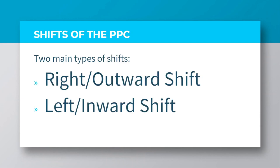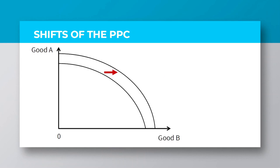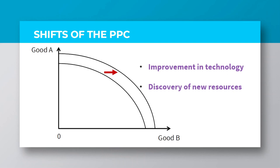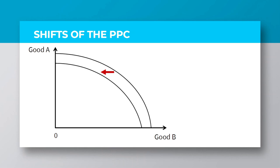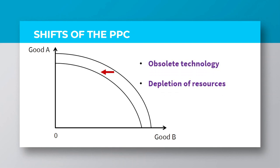Now, the production possibilities curve can shift to the right or left. There are basically two main types of shifts: an outward shift and an inward shift. An outward shift shows that the economy is growing or expanding because in such a situation, more of goods A and B can be produced, and this could come about through the improvement in technology or the discovery of new resources. An inward shift represents that the country is contracting or showing decline in growth, since less of both goods A and B are produced, and it could come as a result of obsolete or old-fashioned technology or possibly a depletion in the resources.